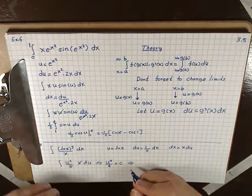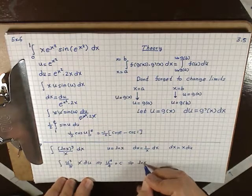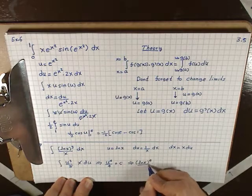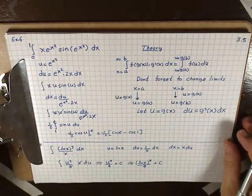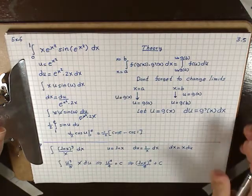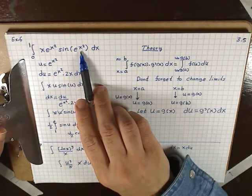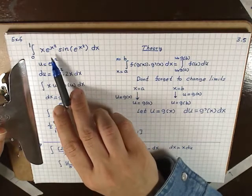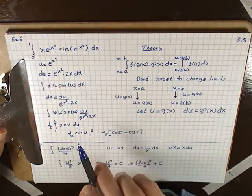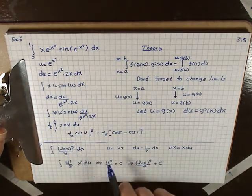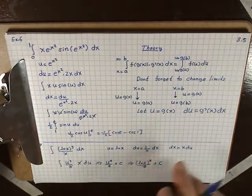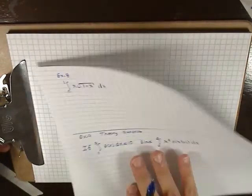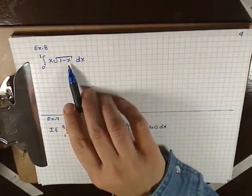We get u⁴/4 + C. Now put u back in to get the answer in terms of x: ln(x) to the power of 4 over 4, plus C. To review these two questions: in the first, we let u = e^(x²) because its derivative gave us the rest of the integrand, x·e^(x²) dx. In the second, we let u = ln(x), whose derivative 1/x dx appears in the integral.